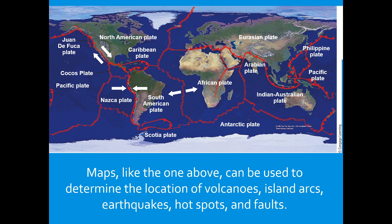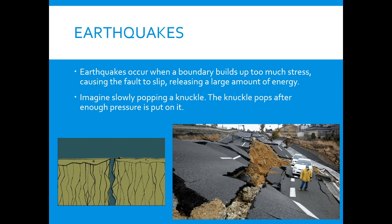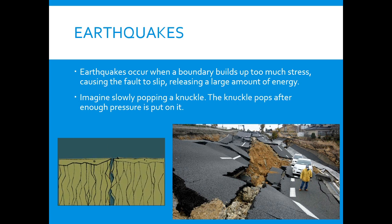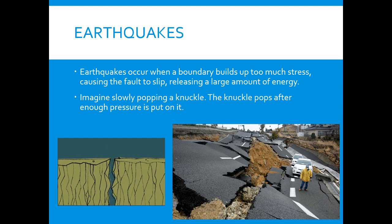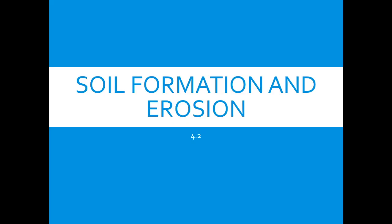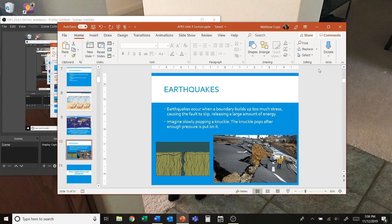The Ring of Fire runs around the Pacific Plate, forming a ring of island arcs and numerous volcanoes. An earthquake is basically when a boundary builds up too much stress and causes a slipping action that releases a huge amount of energy. You can think of it like popping your knuckle — if you slowly put pressure on it, nothing happens, but eventually there's enough stress and you get a pop. That's one way to think about it.